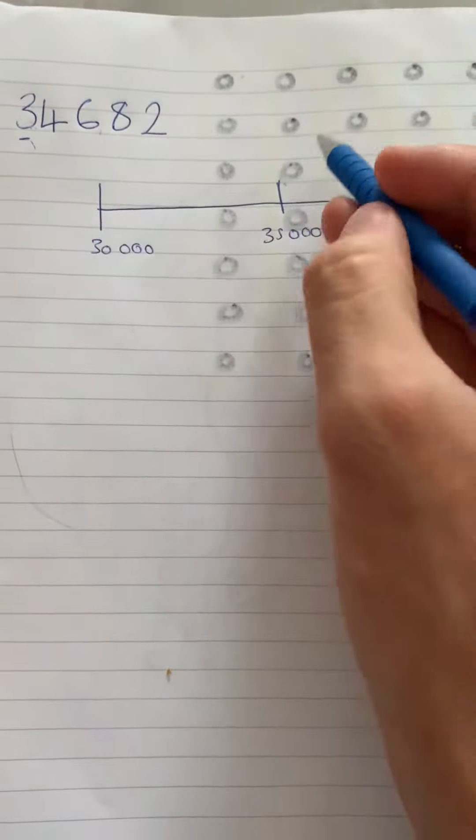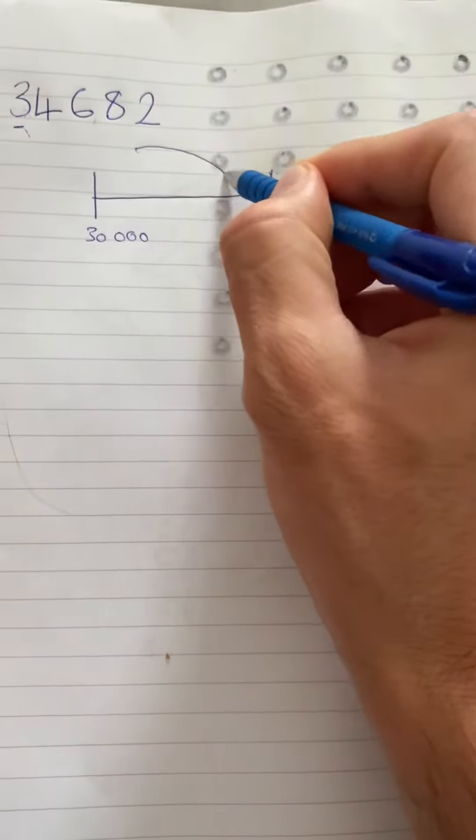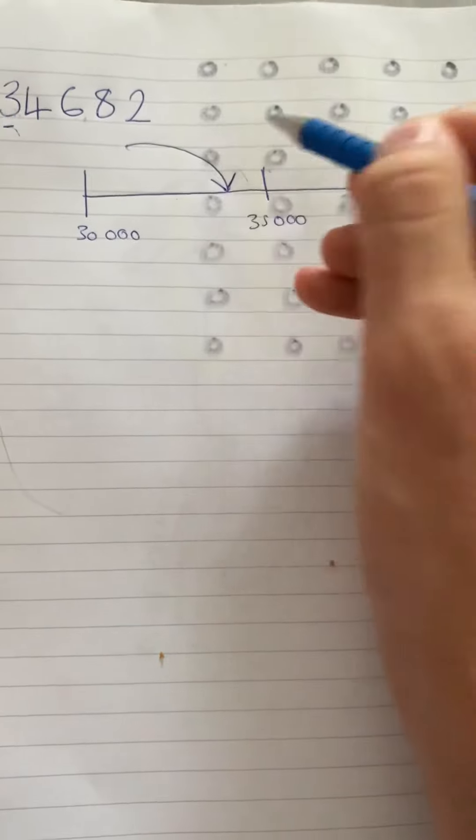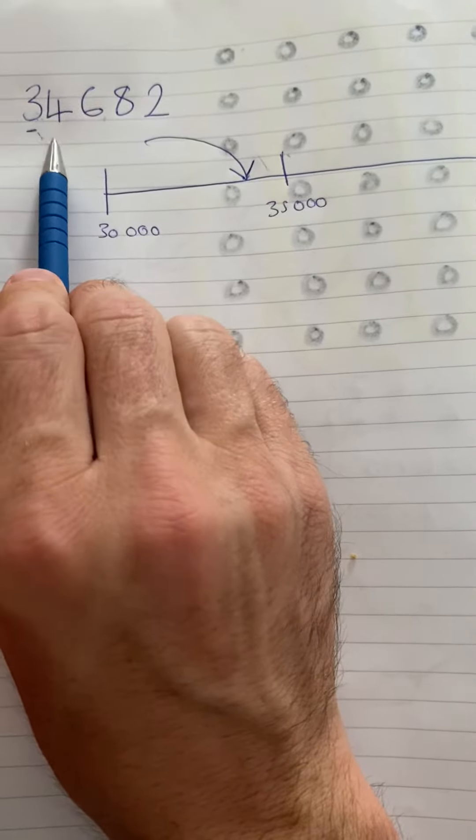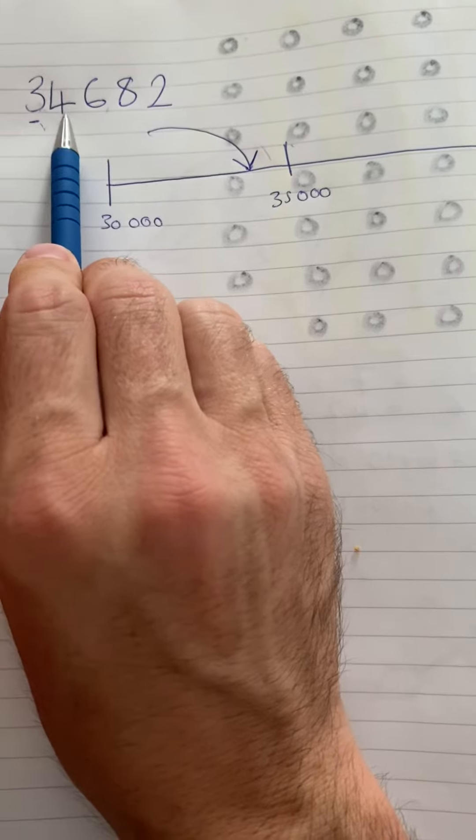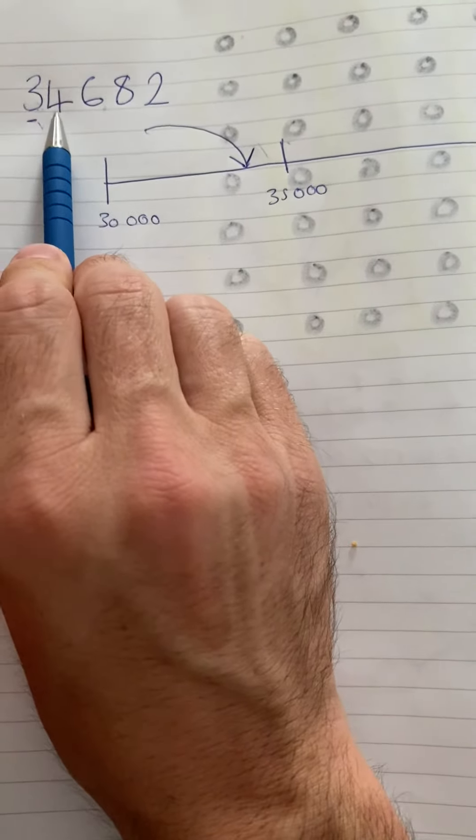Where does this number sit? Well, we know it sits somewhere around here. Mathematically, you look to the number digit to the right. And if it's four or less, you round down. If it's five or above, you round up.